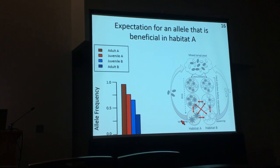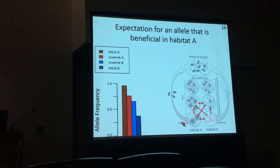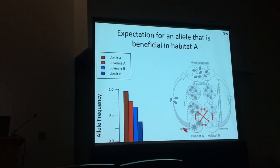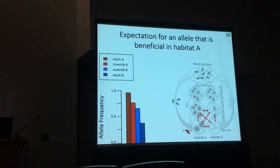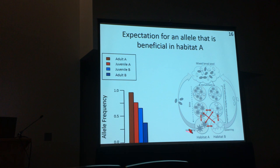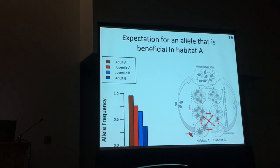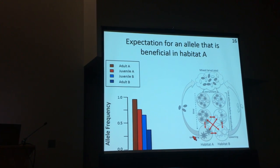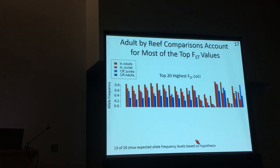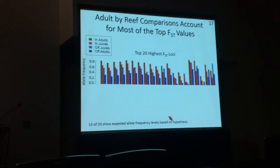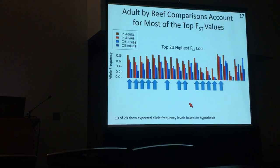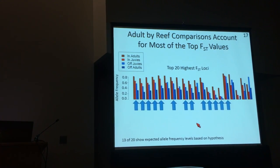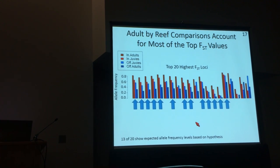To examine whether selection is stronger in adults than juveniles at specific loci, we computed pairwise FST values across all comparison types. We expect that at a locus under strong selection, allele frequencies in juveniles from each habitat would be intermediate but trending in the same direction as the adults. When we take the top 20 highest-FST loci across all pairwise comparisons, 13 of those 20 match that expected arrangement exactly — highly unlikely to occur by chance. We're pleased with this and think it is strong evidence that the selective scheme is real.